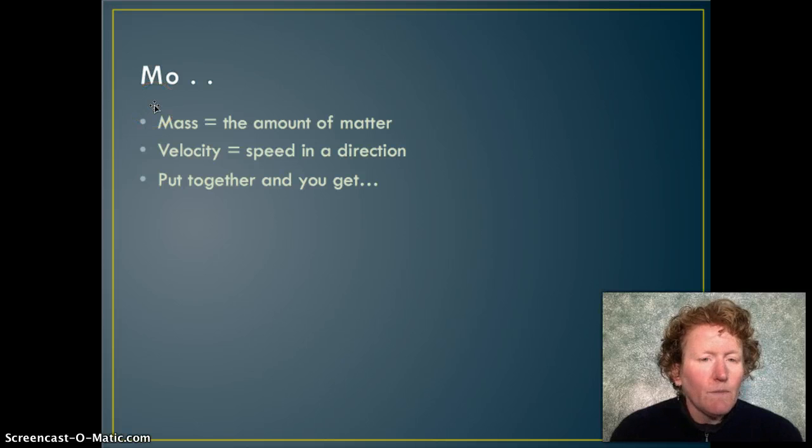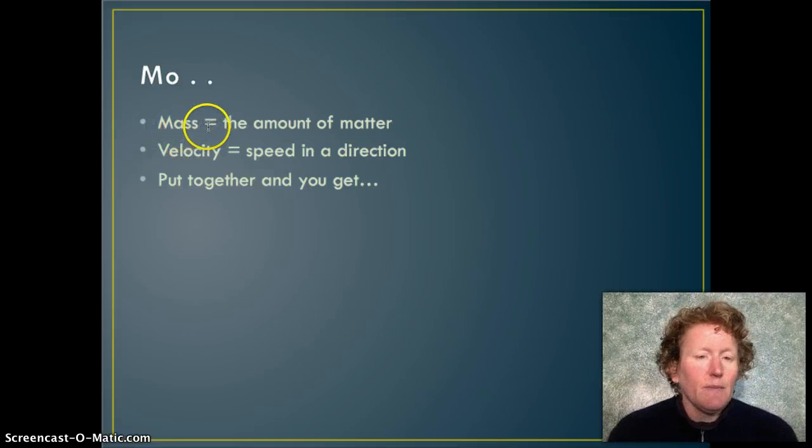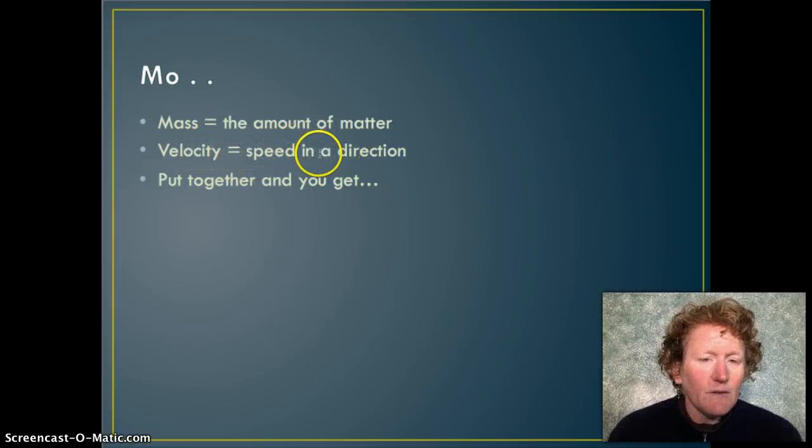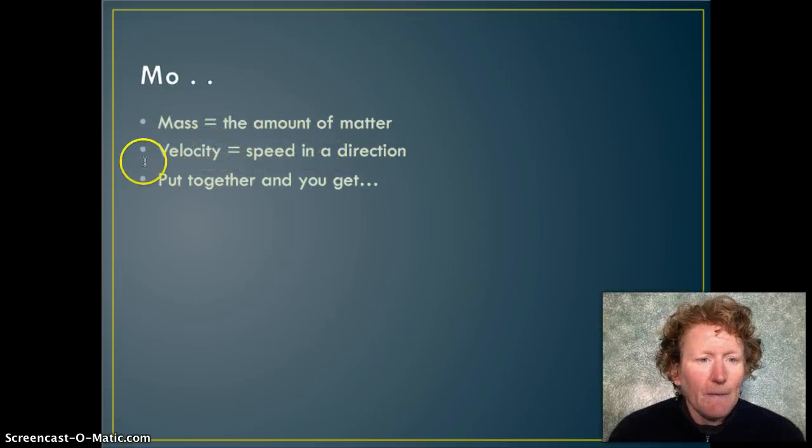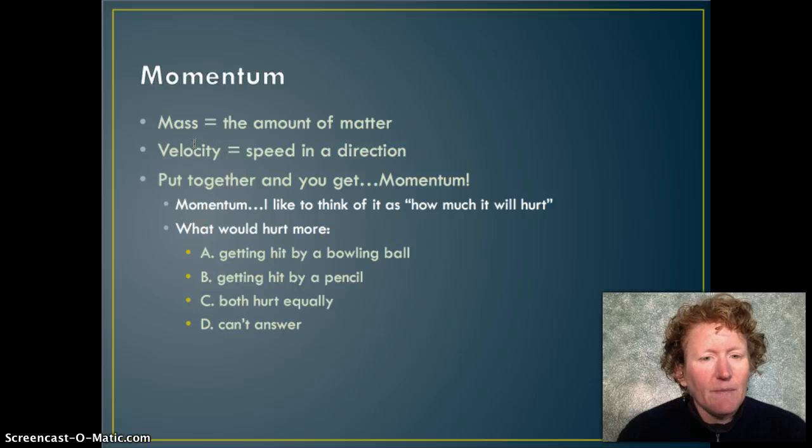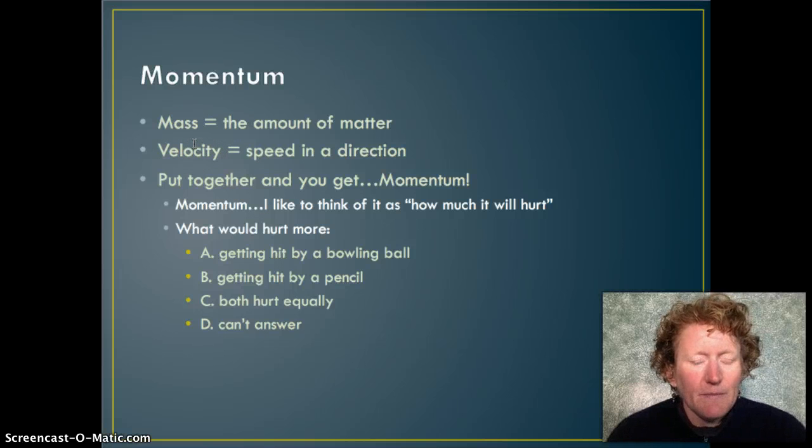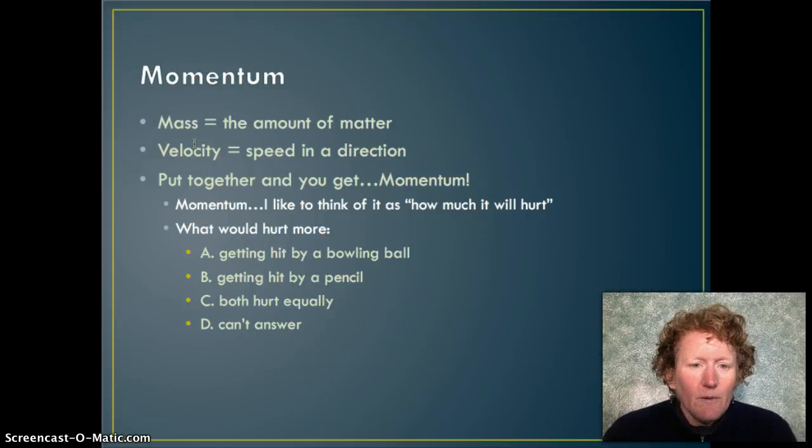Momentum is the product, meaning multiplying mass—the amount of matter or stuff in something—times the velocity, the speed in a particular direction. Remember, we can represent velocity with a vector. If you put mass and velocity together and multiply them, you get momentum. Let's think about momentum in terms of what you already know.